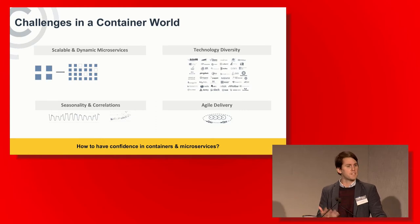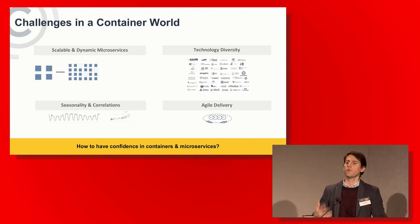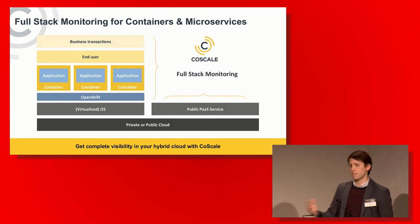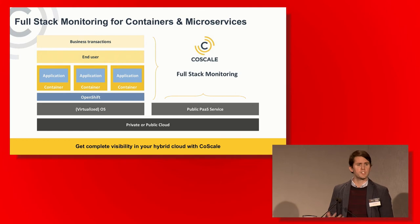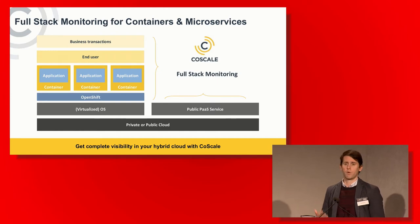On top of this, there is a lot of seasonality inherent to the data we're capturing, and there are also a lot of correlations in the data. So we need automated techniques to help us understand what is going on. This is really what CoScale is about — we deliver a full stack performance monitoring platform, because there are so many layers in the container stack that are important to monitor.